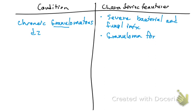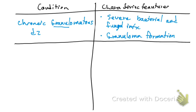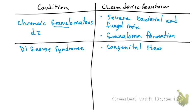So if you see a patient with granuloma formation and severe bacterial and fungal infections, think of chronic granulomatous disease. The next disease we are going to see is DiGeorge syndrome. We have another video on DiGeorge syndrome, but here we will mention three characteristics. The first is congenital heart disease.